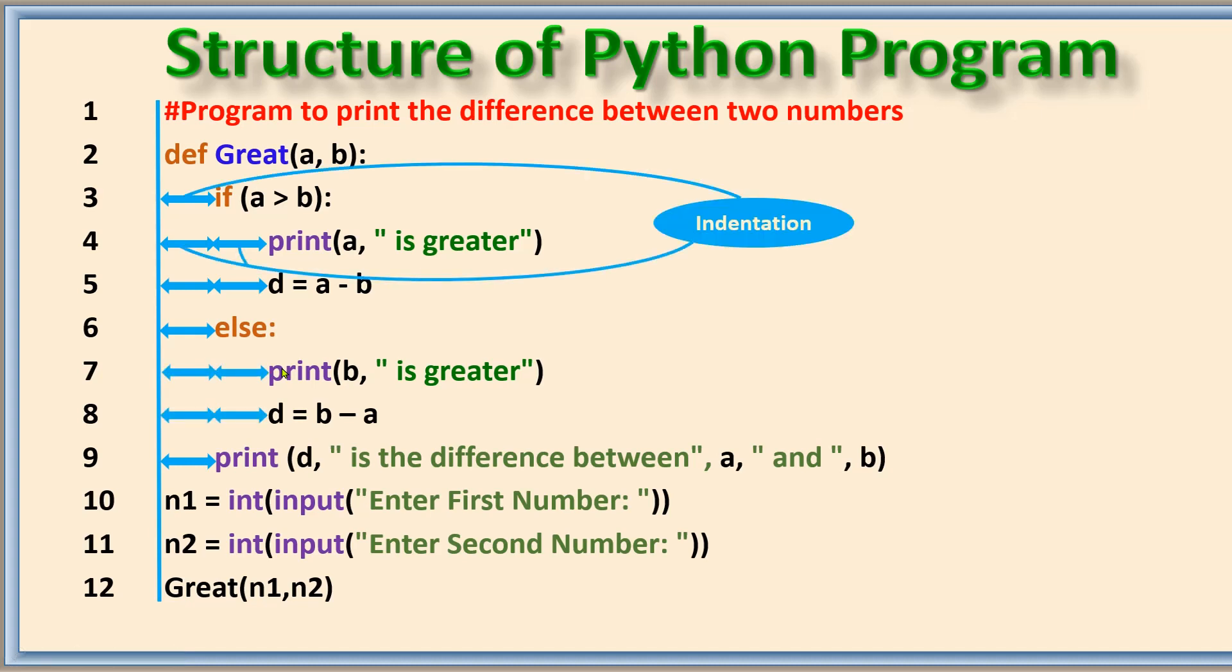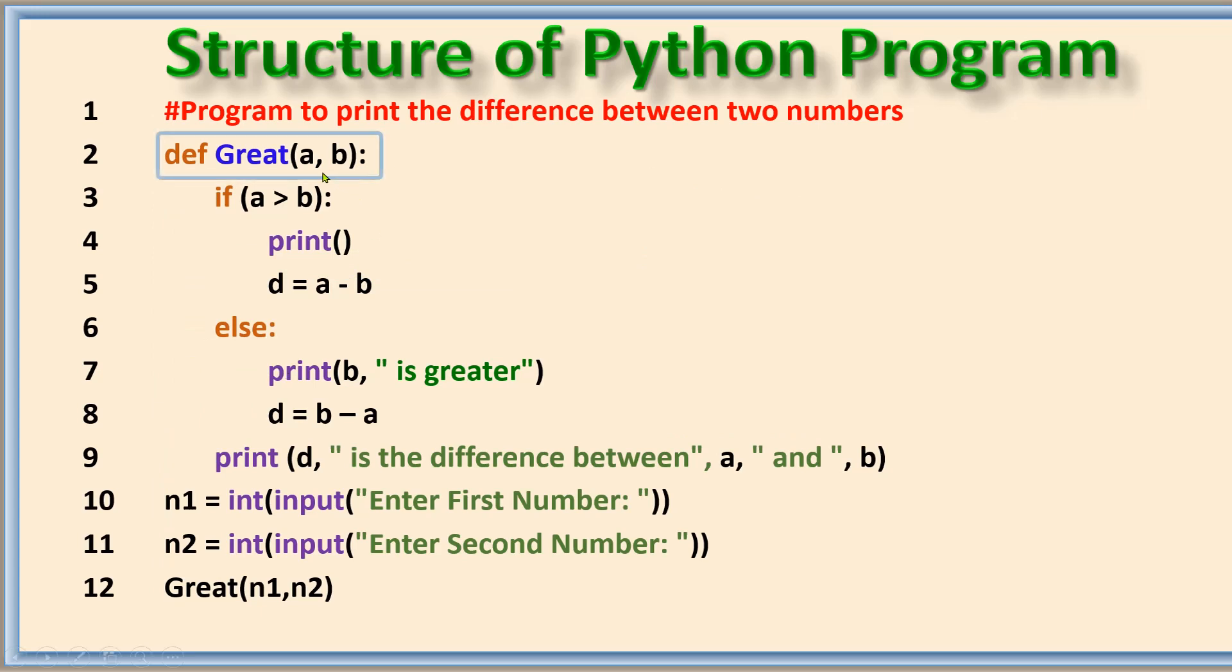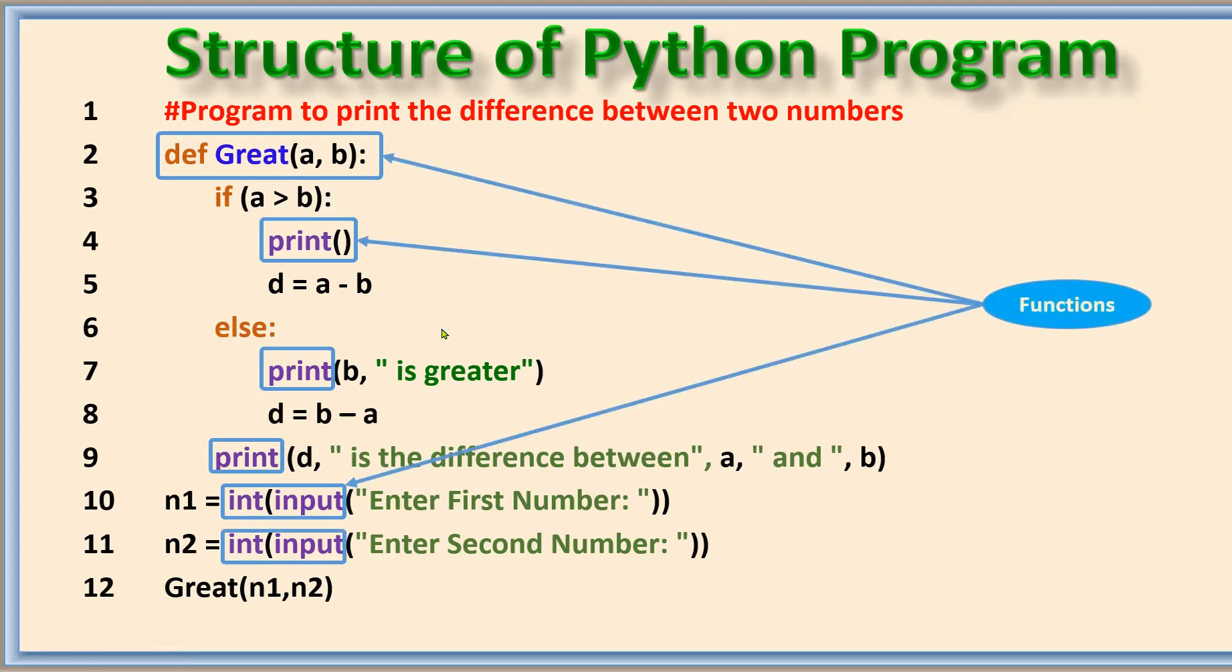So now I think you understood what is block and what is indentation. If you see the second line, this is a function header. Function is a block of code which runs when it is called. Even if this 'print' here is also a function, it runs when it has been called. This is predefined already in the Python program. Here this is created by user. Similarly you can see 'int' and 'input'. 'Input' is also a function inside the other function called 'int'. We will see elaborately about functions in future classes. This is just to know what are all the components, so if you don't understand, even you don't need to worry about this.